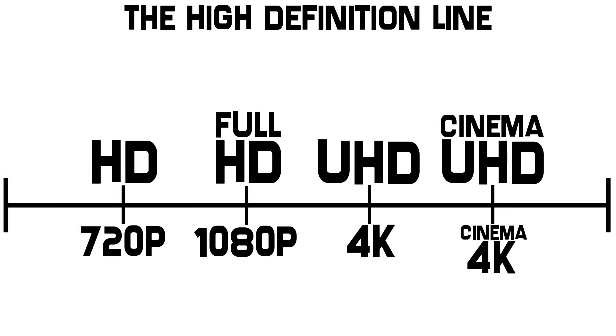The HD line. Starting off with the baby of the group: HD, or 720p. HD, or high definition, has a horizontal pixel count of 1,280 pixels and a vertical pixel count of 720 pixels, for an improved 921,600 pixels at a 16 by 9 aspect ratio. Note that that is exactly three times the number of pixels in standard definition. 720p is far better than standard def, but it can still seem a little pixelated at times, especially on larger displays.